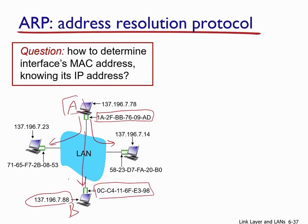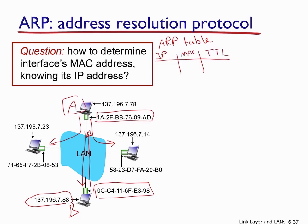The ARP broadcast request asks about the MAC address of the host with IP address 137.196.7.88. Host B will reply back with a unicast ARP reply message containing B's MAC address. Each node in the network has an ARP table — a table with three columns providing mapping between IP addresses and MAC addresses, along with a TTL (expiration time) for each entry. Initially the table is empty; as a result of the reply from host B, host A adds B's IP address to the table.